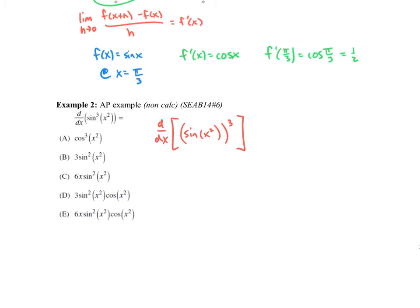So our first layer, our first derivative is going to be the power rule where we bring the three down and then we reduce that power by one. So we have three times sine squared of X squared. Then we're going to multiply by the derivative of sine, which is going to be cosine of X squared, and then multiply by the derivative of X squared, which is going to be 2X. So if we just multiply the three and the 2X, we get option E based on that three part chain rule.